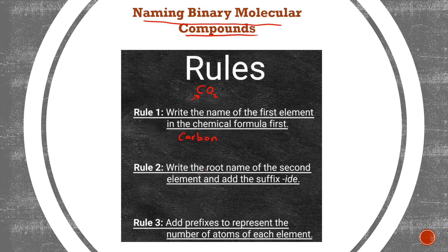Rule 2: write the root name of the second element and add the suffix -IDE. The second element is oxygen, so we write 'oxide.' Remember — with ions, when it's an ion we add -IDE. We'll do the same thing here: remove the last part and put -IDE. So we get 'carbon oxide.'